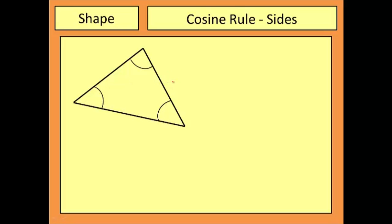So let's have a look at this. Here's my triangle, it is non-right-angled and just like the sine rule the very first thing I need to do is to label this up. So just to remind you,